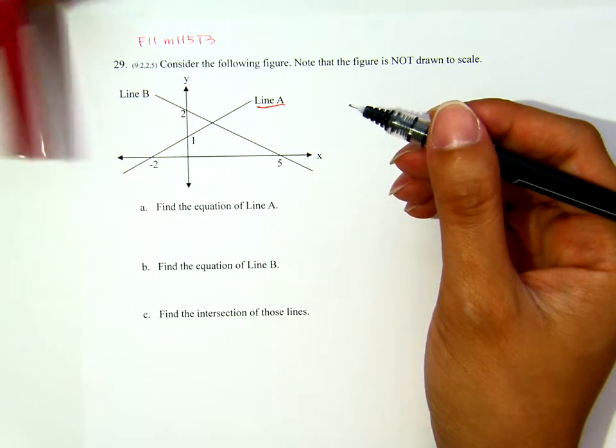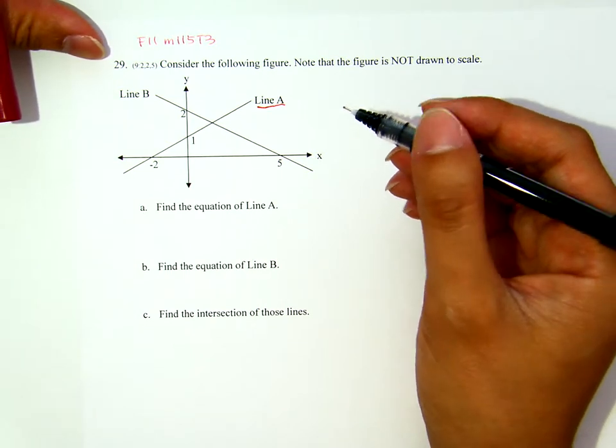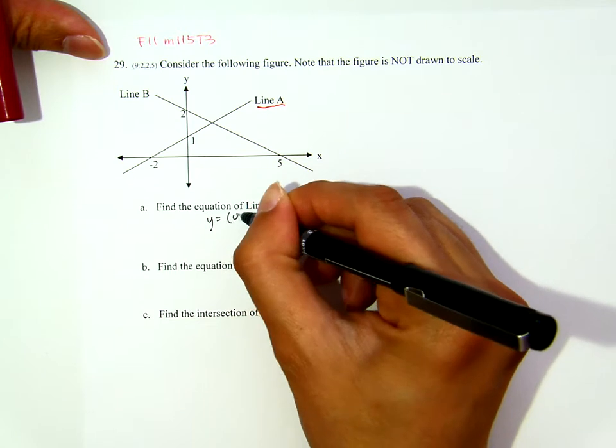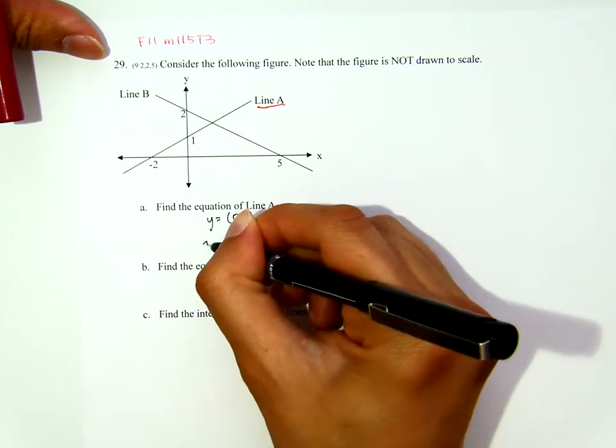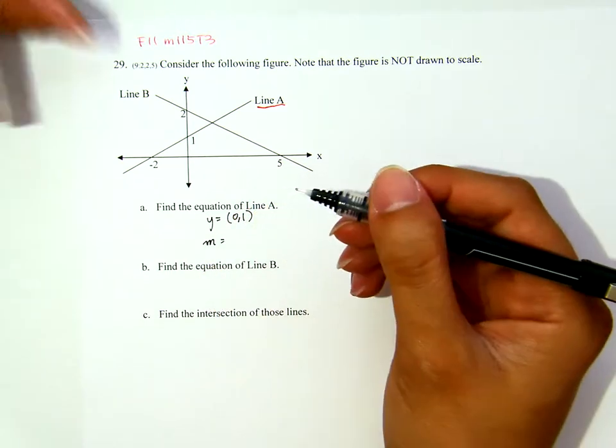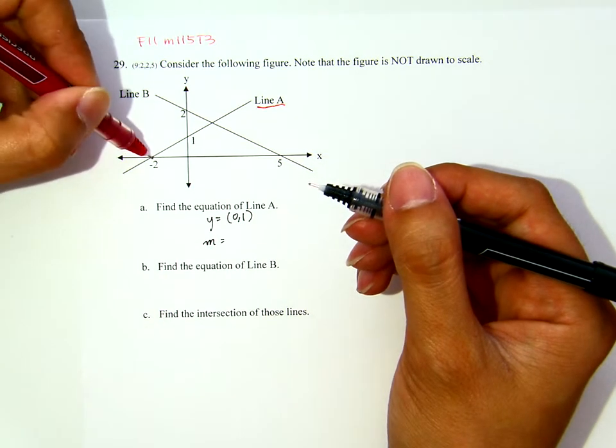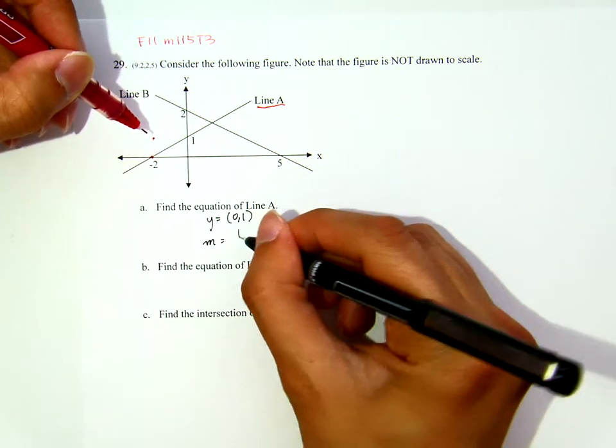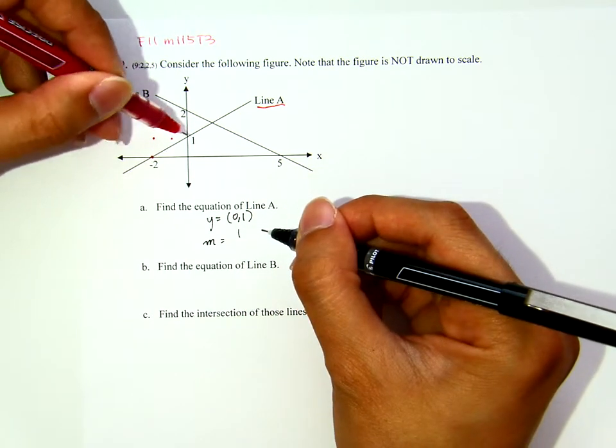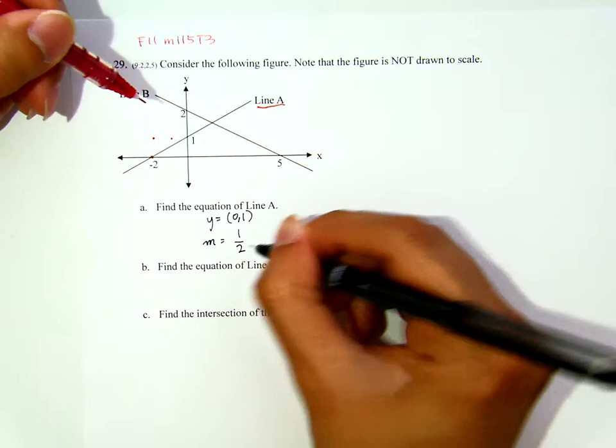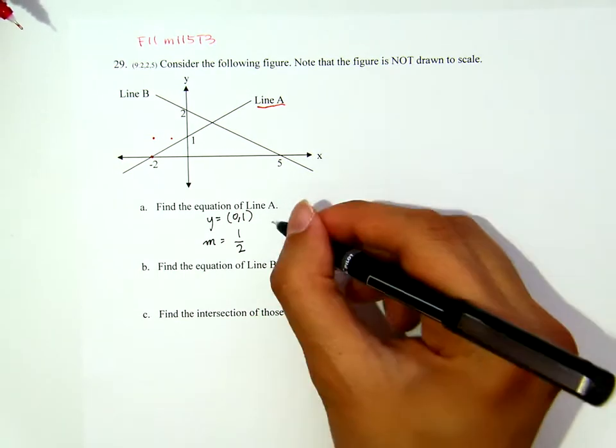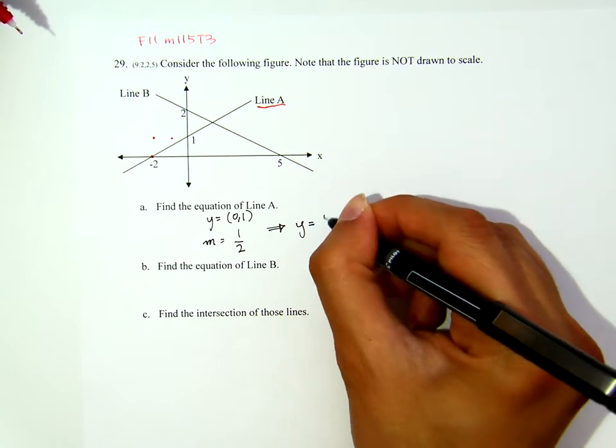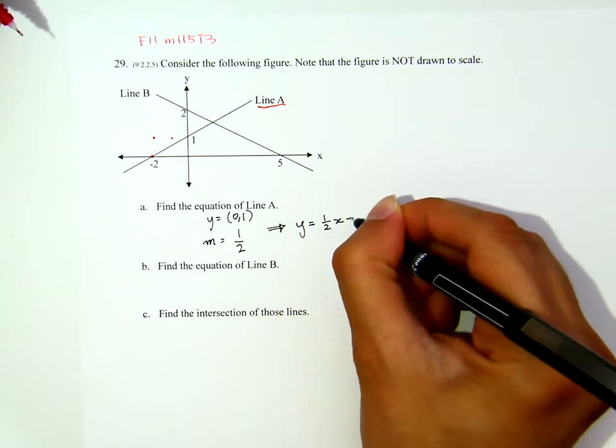What I will do for the equation of line A: the y-intercept is 0, 1 and the slope will be, if I start from here to go to the other point, I go up one unit and I run two units. That's the slope. Therefore, the equation of line A will be y equals one-half x plus one.